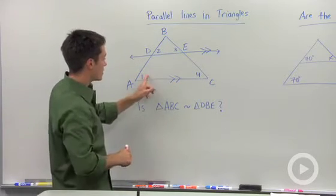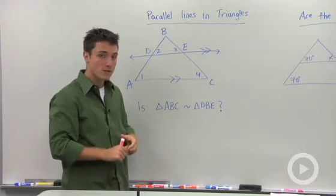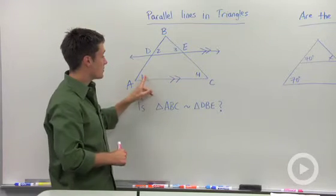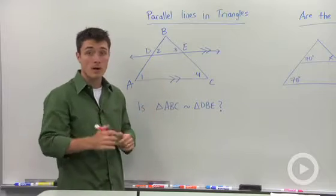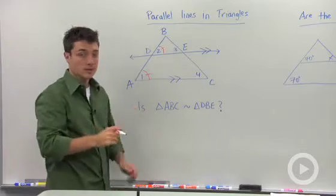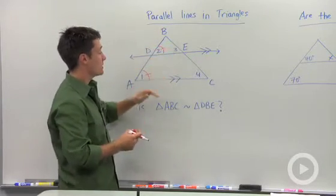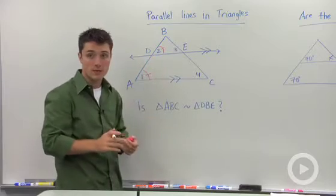And notice that I've marked our angles 1, 2, 3, and 4. The reason why I did that is because I'm going to say that angles 1 and 2 are corresponding angles, which means that they must be congruent to each other. Since we have a transversal, which is AB, and two parallel lines, 1 and 2 are corresponding angles.